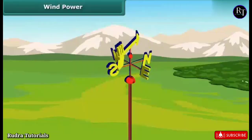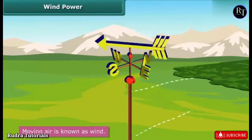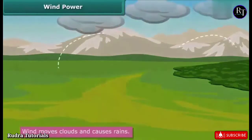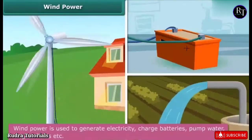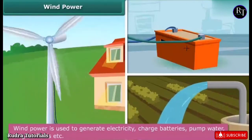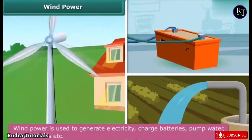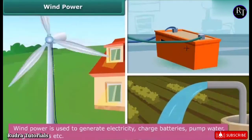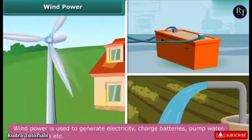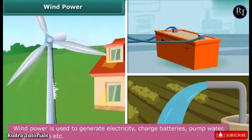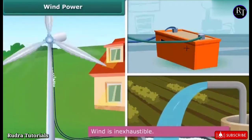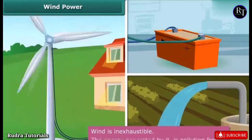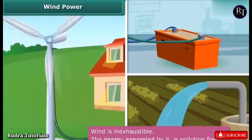Moving air is known as wind. Wind moves clouds and causes rain to be distributed evenly over the Earth. Wind power is used to generate electricity, charge batteries, pump water, and irrigate fields. The biggest advantage of wind power is that wind is an inexhaustible resource and the energy generated is pollution-free.